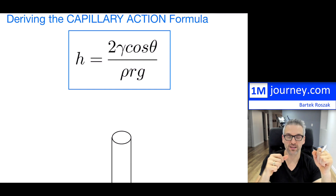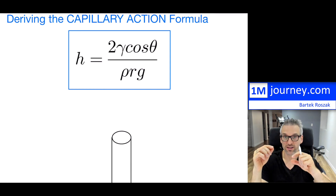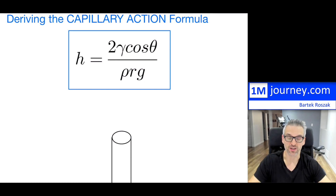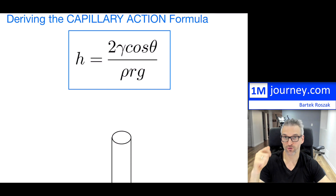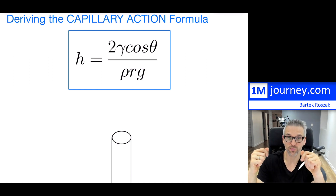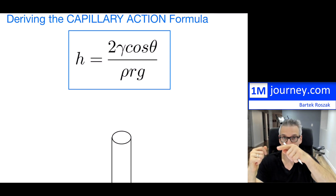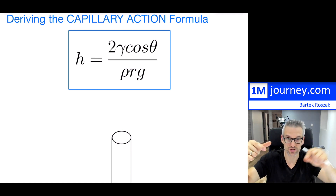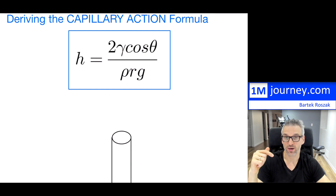So if you have a narrow tube and place it in a liquid, depending on the liquid itself and the adhesion and cohesion forces present, a liquid might go up. That height has a particular formula we can obtain if we know several things. The formula shows two multiplied by the surface tension strength of the liquid — sometimes designated as sigma, here written as gamma — times the cosine of the contact angle. In the denominator, you have density, the radius of the tube, and gravity.